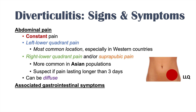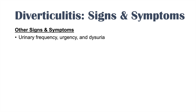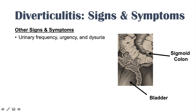There are also associated gastrointestinal symptoms, including nausea and vomiting — when present, you want to worry about obstruction. Other GI symptoms include alterations in bowel habit such as constipation or diarrhea. Patients can also have urinary frequency, urgency, and dysuria, because an inflamed diverticulum in the sigmoid colon can push against the bladder, making the person feel like they need to urinate and even causing a burning sensation.